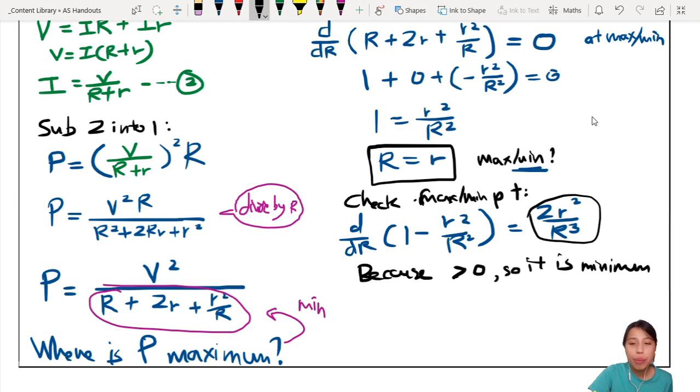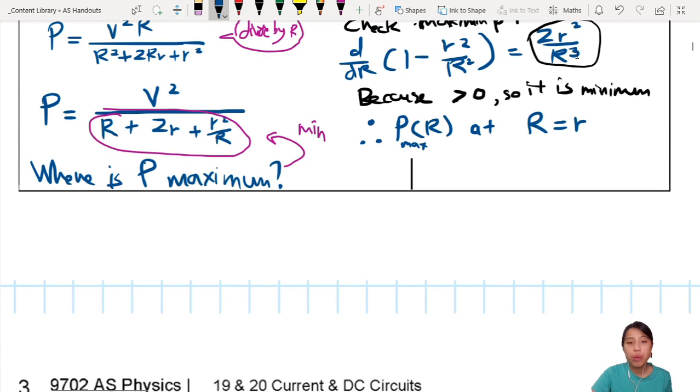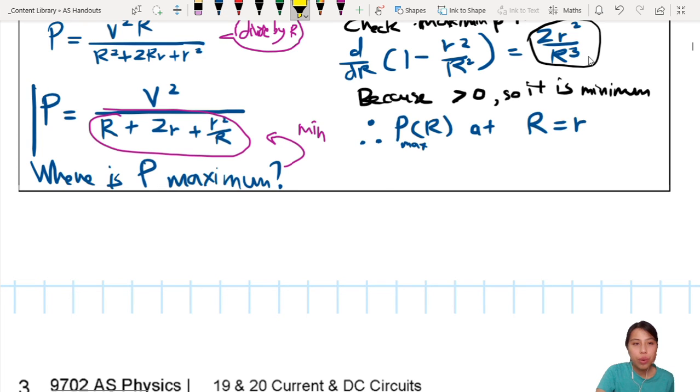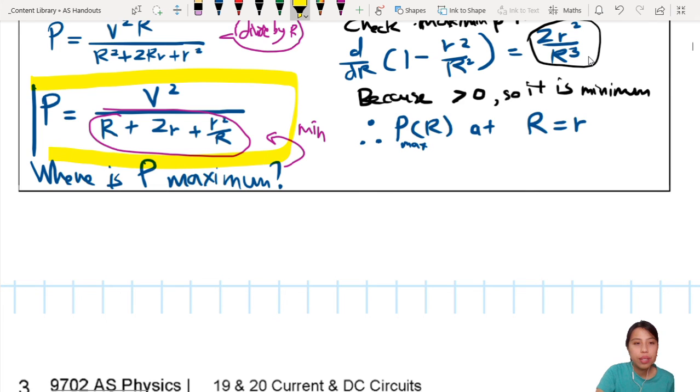So this denominator is a minimum when R = r. Which means, therefore, your final conclusion: P is maximum at R = r. And this P max is the function P(R). P(R) is maximum at R = r. And if you go and plot in a plotting website like Desmos or GeoGebra, you go and plot this whole thing out, you will get the function that we have been looking at earlier.